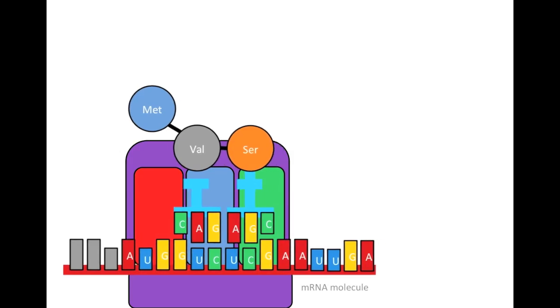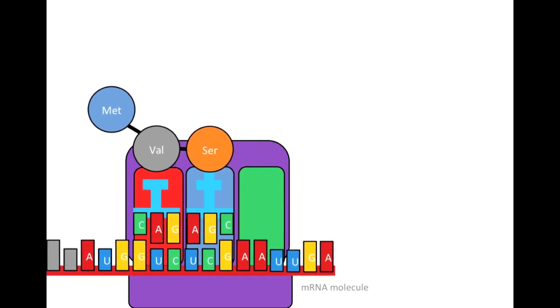Again, we will shift down the mRNA molecule. Again, you can see that the tRNA in the P site bears the growing polypeptide chain. The tRNA in the E site will be expelled.